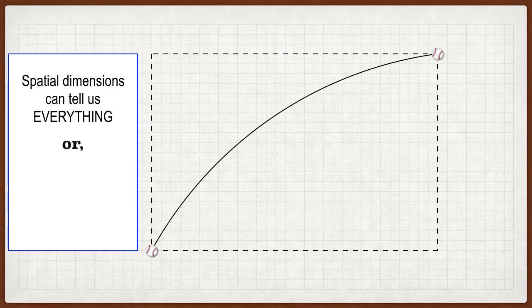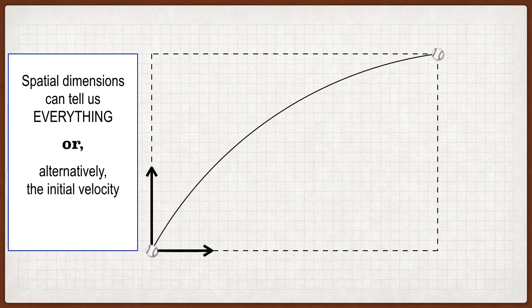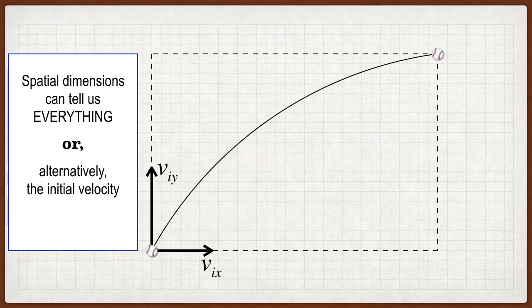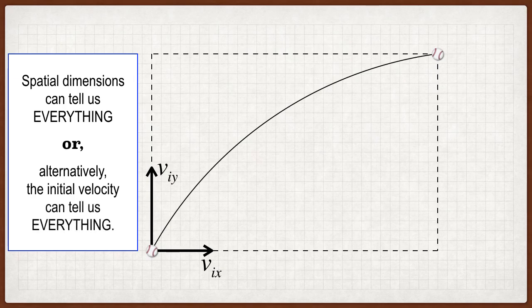The other thing to mention is that, in addition to spatial dimensions, the alternative strategy is: if you know the initial velocity — the initial y component (viy) and the initial x component (vix) — the composition of those two arrows is tilted at 53 degrees. If you know those, they can tell us everything.